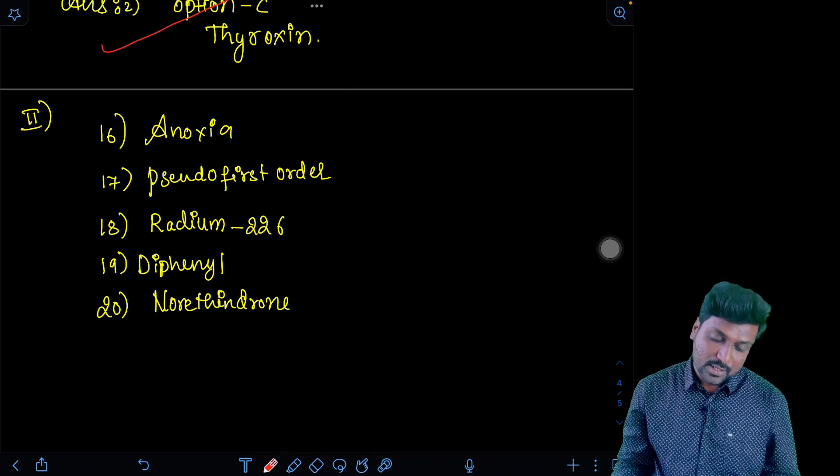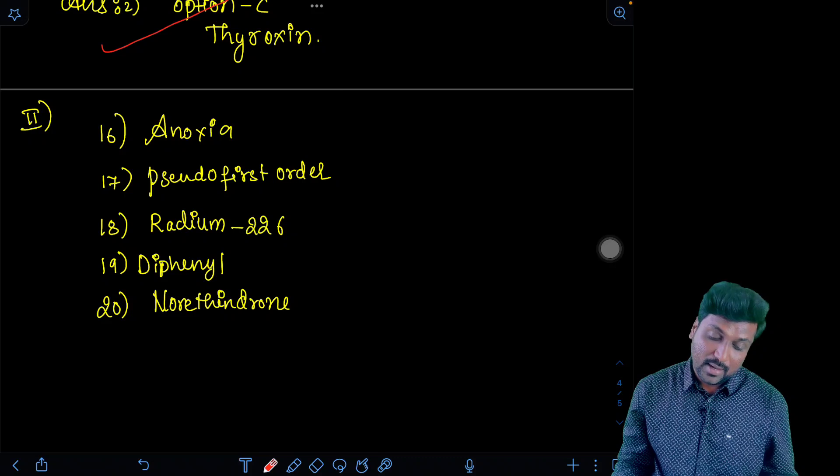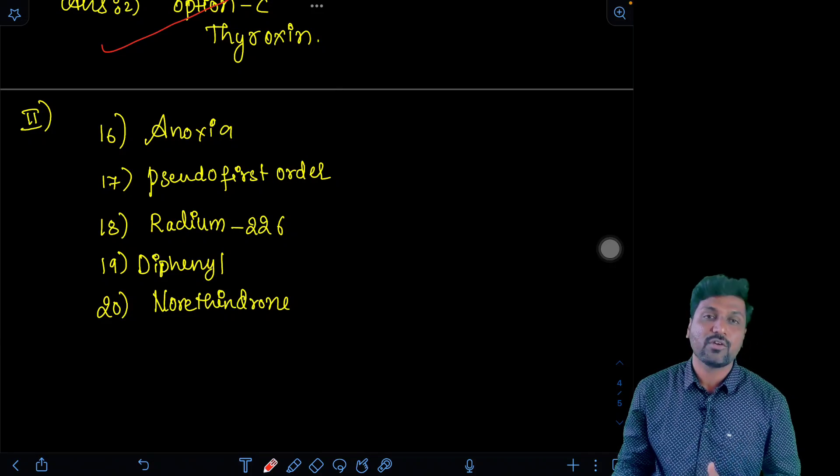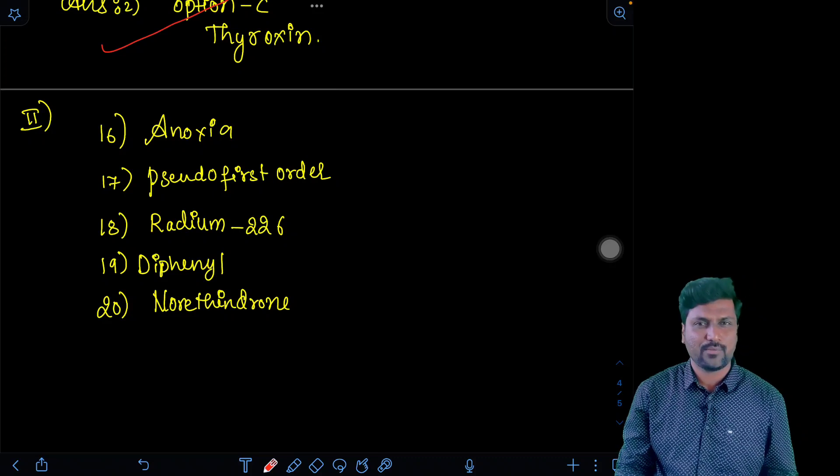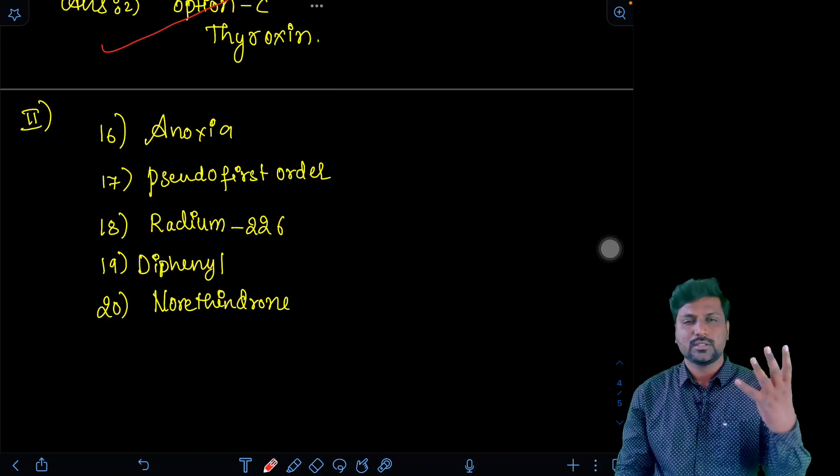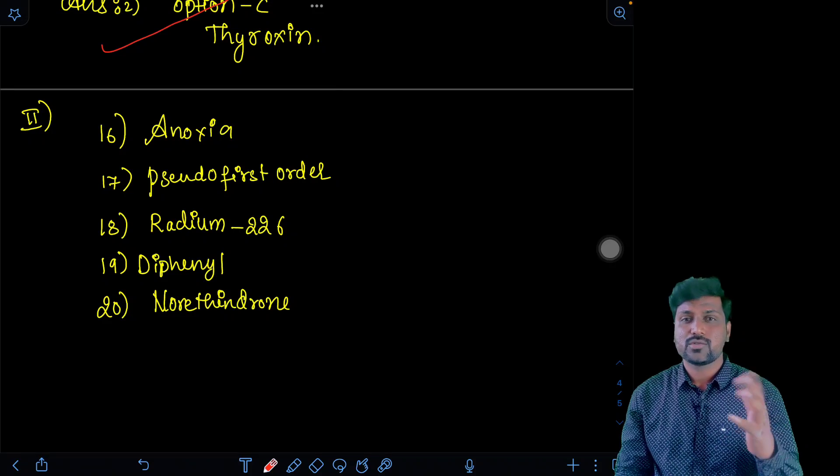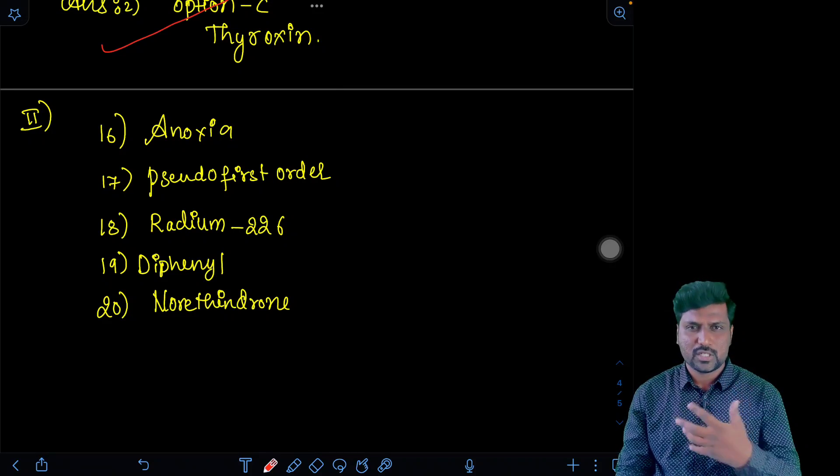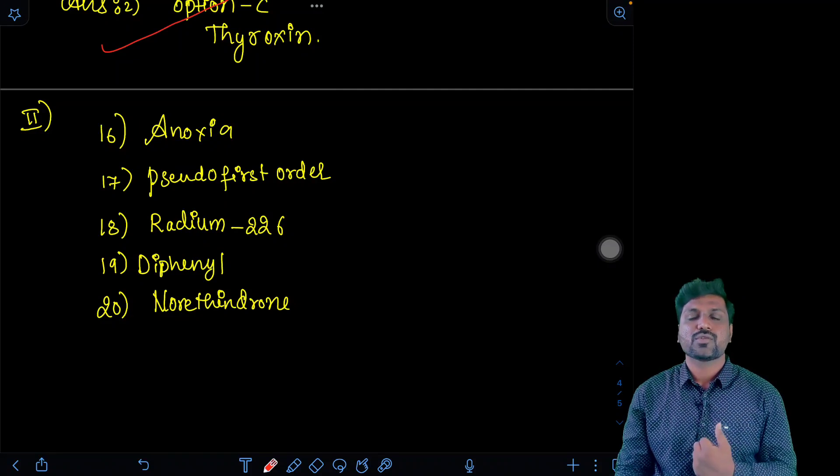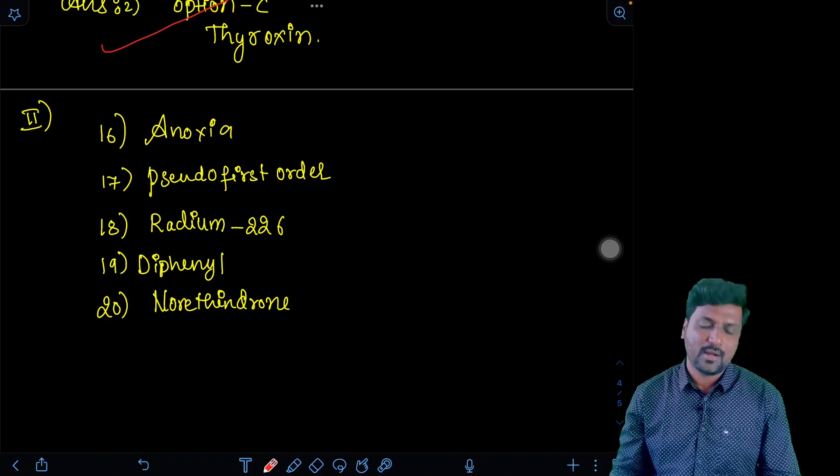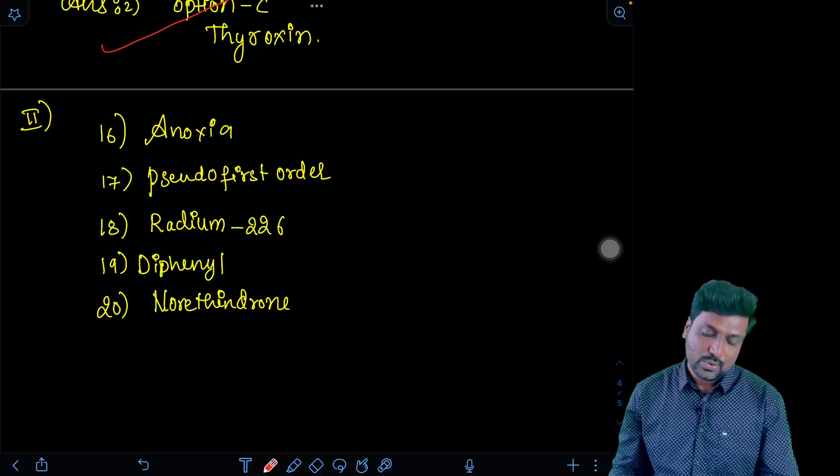Because of low concentration of O2 in the blood and tissues of the people living at high altitude, people suffer from the disease that is called anoxia. In high altitude, the oxygen level is less. So therefore, the hemoglobin could not dissolve the oxygen. So therefore, suffocation will be taking place because of lack of oxygen dissolution in the blood. So therefore, that condition is called as anoxia.